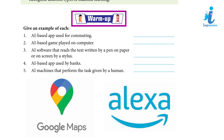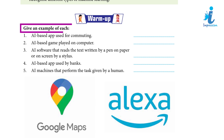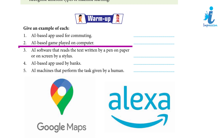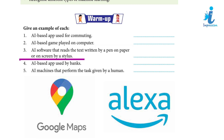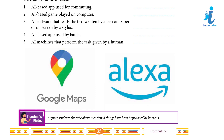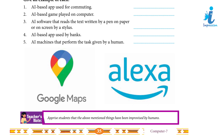Warm-up: Give an example of each — 1. An AI-based app used for commuting. 2. An AI-based game played on a computer. 3. AI software that reads text written by a pen on paper or on screen by a stylus. 4. An AI-based app used by banks. 5. An AI machine that performs tasks given by humans. Teacher's note: a prize student — the above-mentioned things have been improvised by humans.